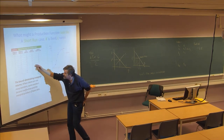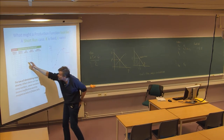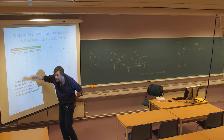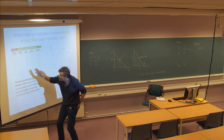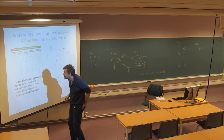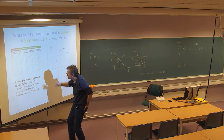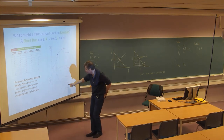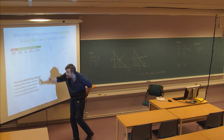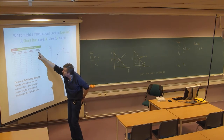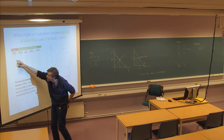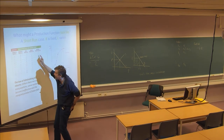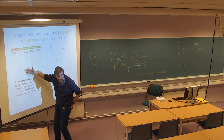The average product is defined by taking the output Q and dividing by L — the amount of labor — to get the average production per worker given various numbers for this resource. The marginal product is the change in Q divided by the change in L. For example, 10 minus 0 divided by 1 minus 0 equals 10. You can compute it numerically based on the table values.